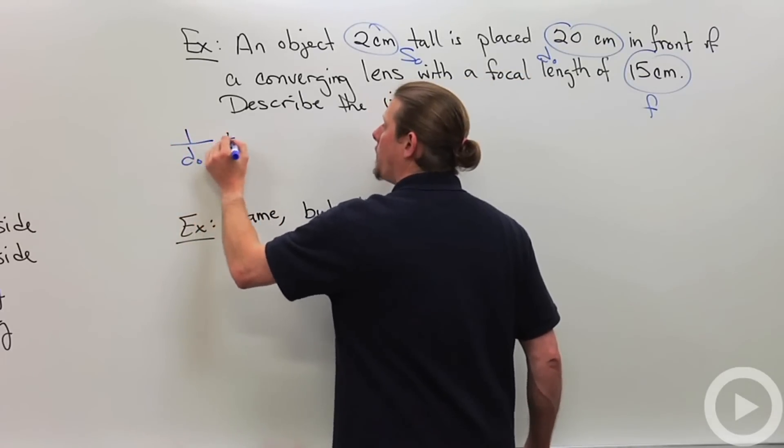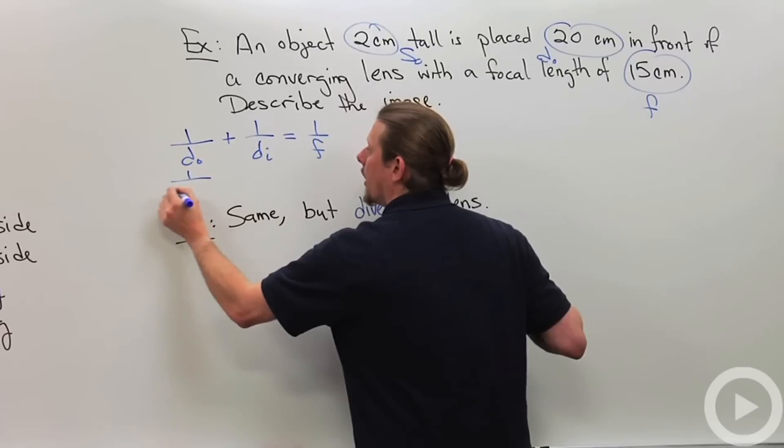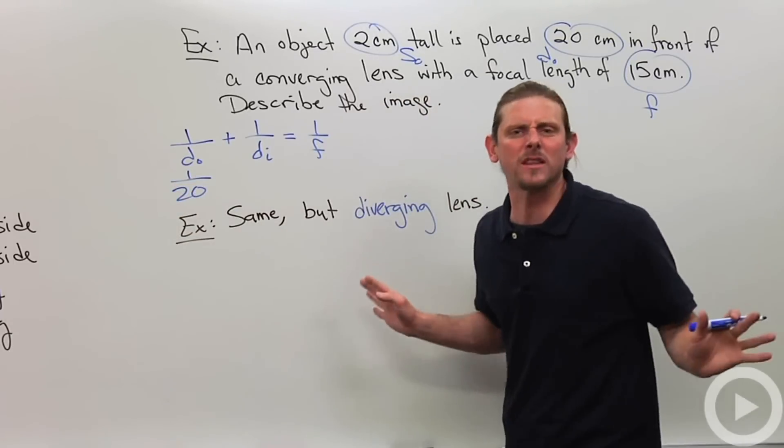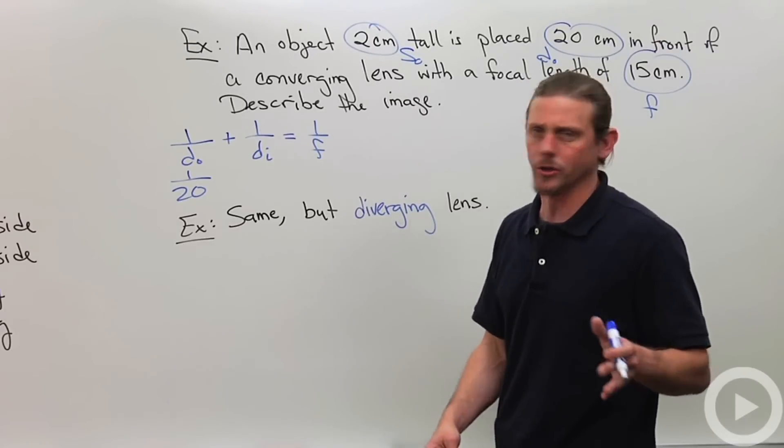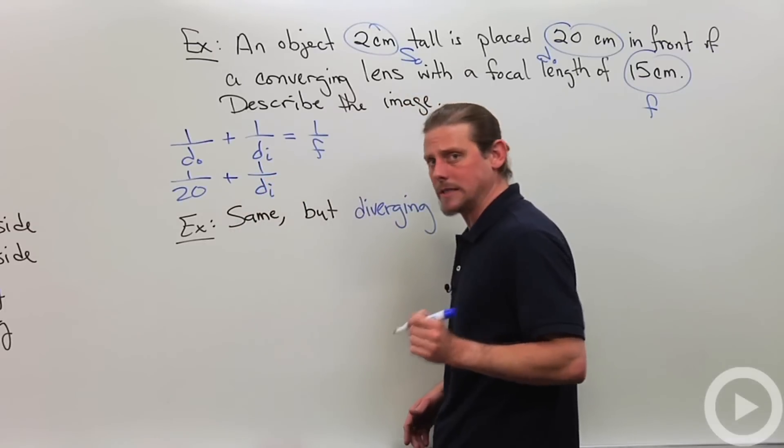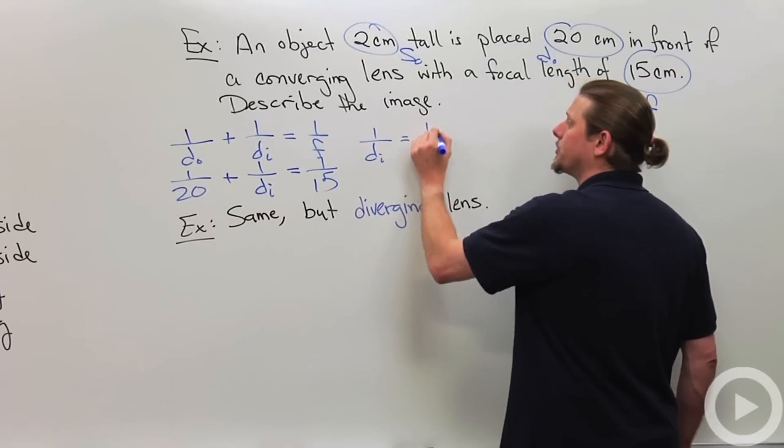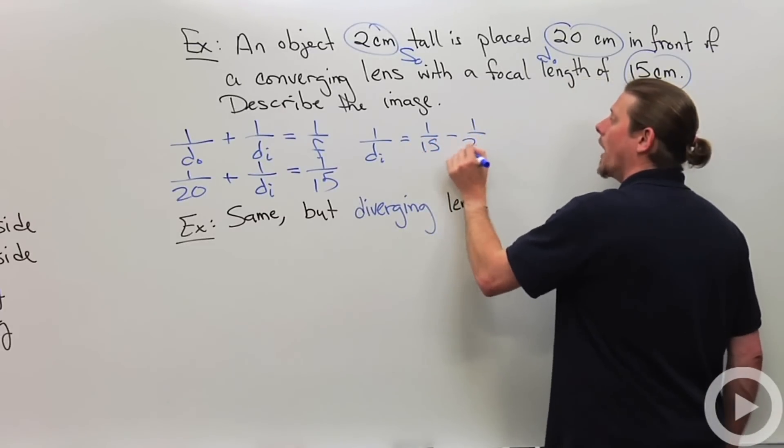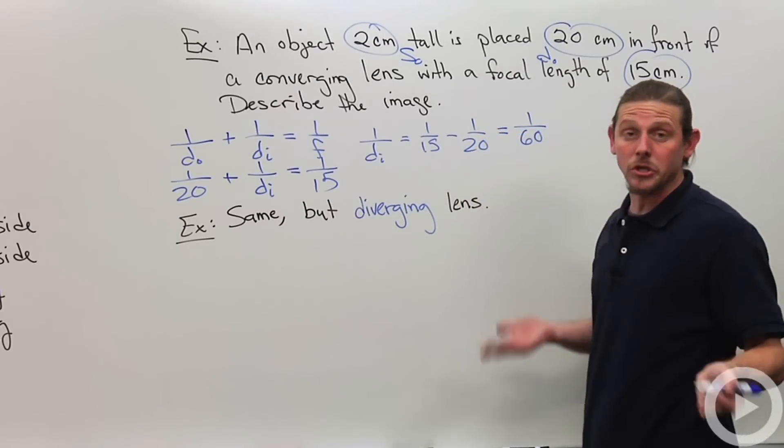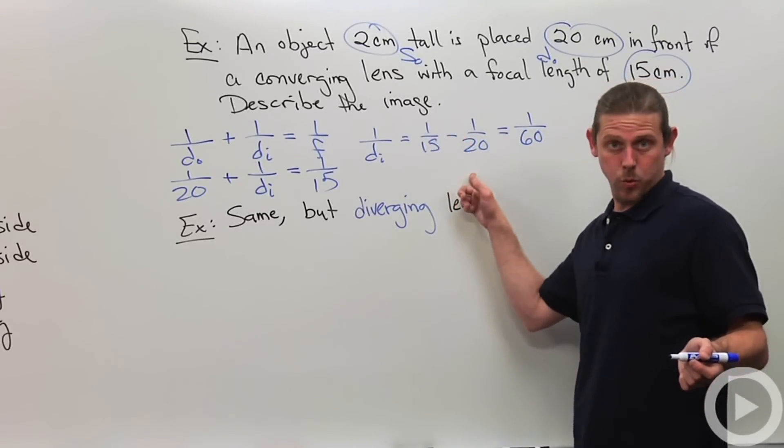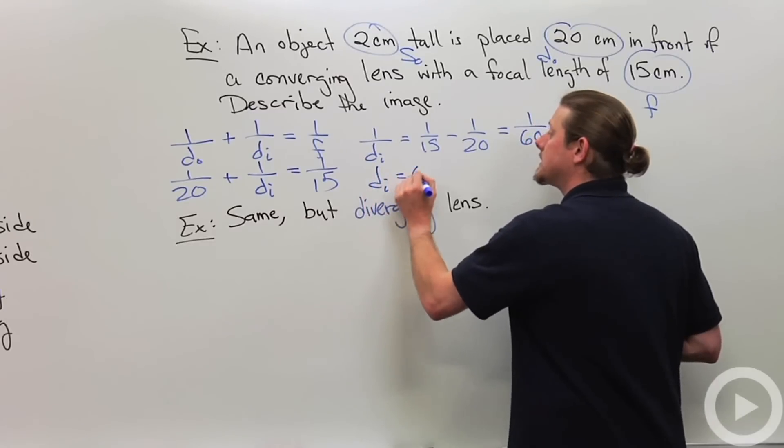So let's just use the lens equation. So we'll say 1 over DO plus 1 over DI equal 1 over F. So 1 over DO, well DO is 20, so I'll do 1 over 20. I'm not going to convert to SI units here because everything's in centimeters. So I should just understand I'm looking for a length. It's going to have to be in centimeters, but you could convert if you wanted to, but I think the math looks easier with that. Plus 1 over, I don't know that, so I'm just going to call it DI equal 1 over F is 15, so I'm going to do 15. So that means 1 over DI is equal to 1/15 minus 1/20. Now if you go through that, you'll find that this is 1 over 60. The easiest way to do it is just type in your calculator, 15 to the negative 1 minus 20 to the negative 1 equals, and then answer to the negative 1, and you'll get 60.